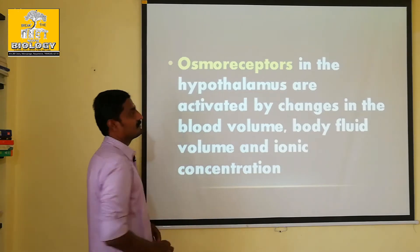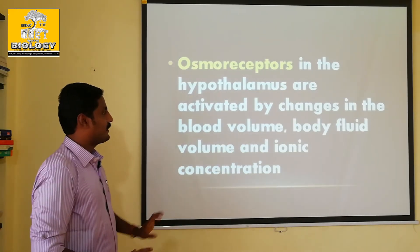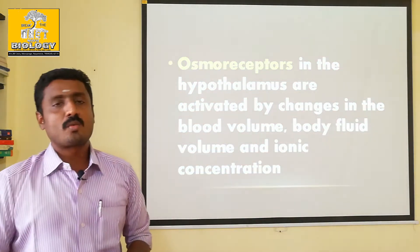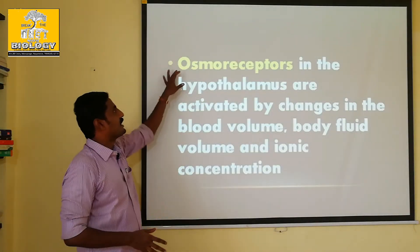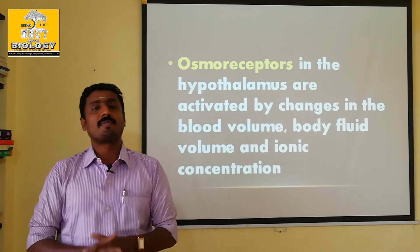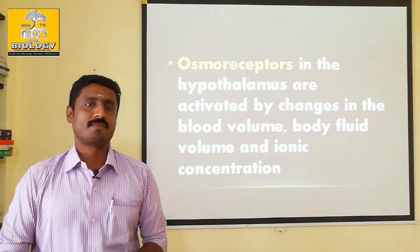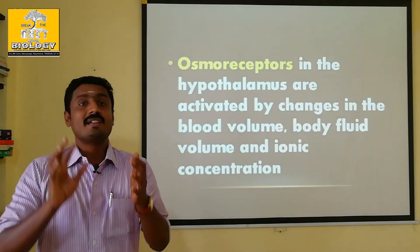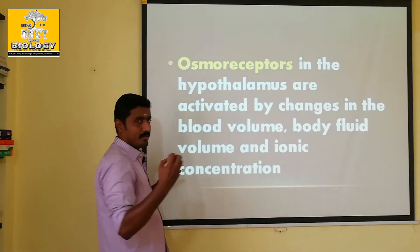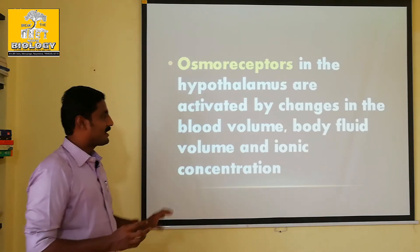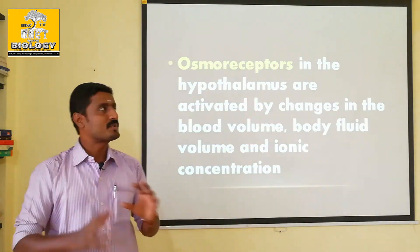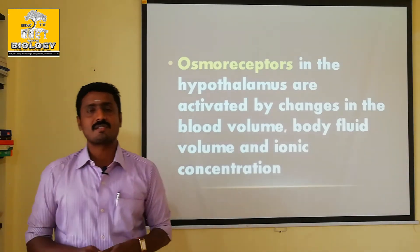The osmo receptors are activated in three conditions: body fluid volume and ionic concentration. After the releasing factor, there will be neurohypophysis. The neurohypophysis will produce ADH. If you are using ADH production, you can increase the volume of blood and fluid volume.